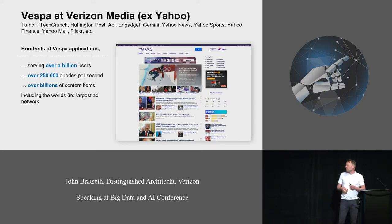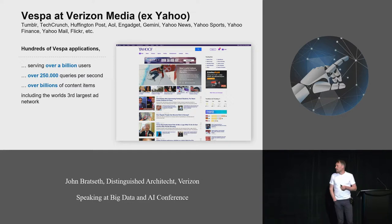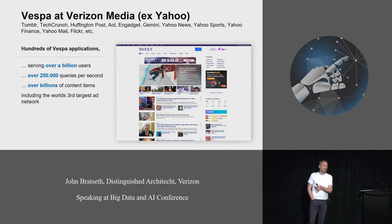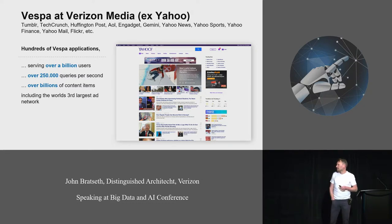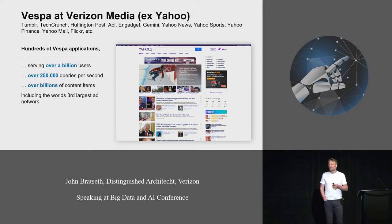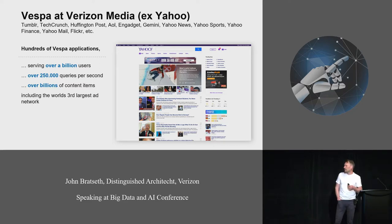A little bit about where we use Vespa at Verizon Media, where I work now, which used to be Yahoo. We have a cloud service where we run Vespa for these use cases. We are serving over a billion users, about 250,000 queries per second across the various Vespa applications that we have. There are 150 different applications and about 100 billion content items — videos, articles, ads, and so on. One of the use cases is the third largest ad network in the world after Google and Facebook.